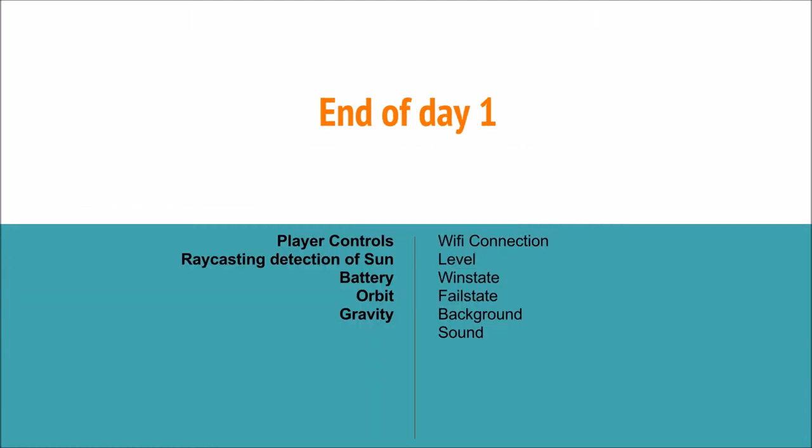At the end of day one, we had some basic play controls, ray casting to detect if we had line of sight to the sun, ability to charge the battery, satellites orbiting planets, planets orbiting the sun, and gravity from planets and the sun as well if we wanted, but I removed that or commented it out. That's already getting way too difficult to steer in my opinion.